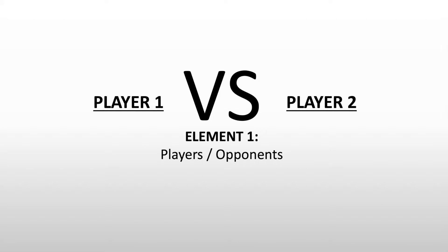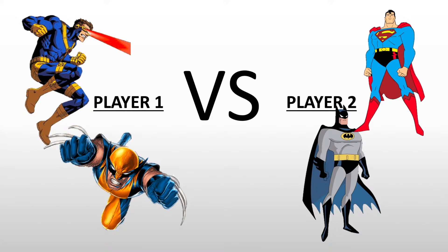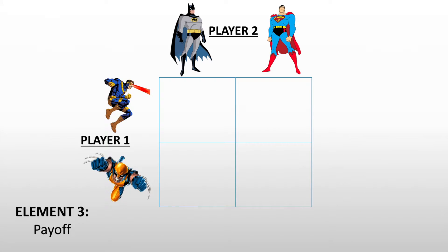For example, we have player one versus player two — this is our element one, our players or our opponents. Each player has two characters where player one can choose either Cyclops or Wolverine, and player two can choose either Batman or Superman. These are our alternative actions — they can choose between the two characters. And then lastly, our element three, which is our payoff or our consequences.